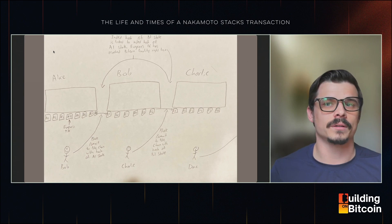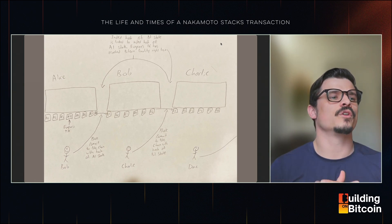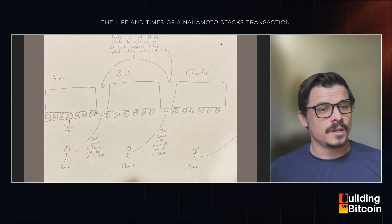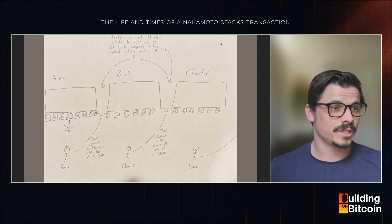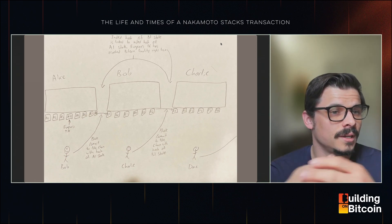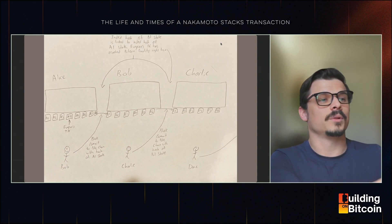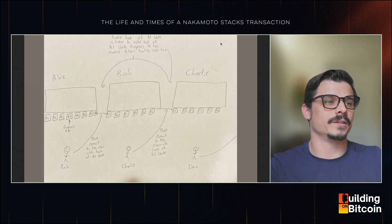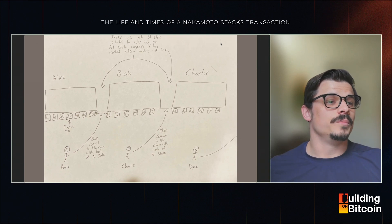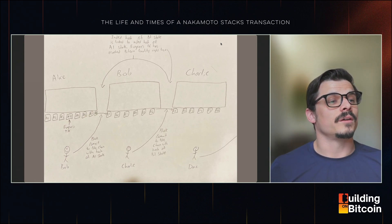At this point Eugene's transaction is finalized. Charlie begins his tenure and the process repeats with Dave and so on. From Eugene's perspective, that initial confirmation in the Stacks block took maybe five to ten seconds. Then over the course of the rest of that Bitcoin block plus the next one, that Stacks transaction achieved Bitcoin finality — making it as hard to reverse Eugene's transaction as it would be to reverse the state of Bitcoin all the way back to Bob's tenure.